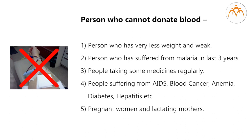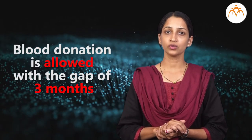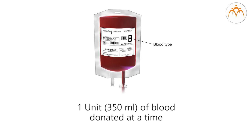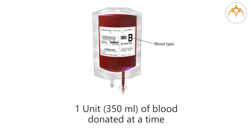Five, pregnant women and lactating mothers. Six, persons consuming alcohol or who are drug addicted. In our country, even a healthy person is allowed to donate blood with a gap of three months. At a time, one unit, i.e. 350 ml of blood can be donated by the donor.